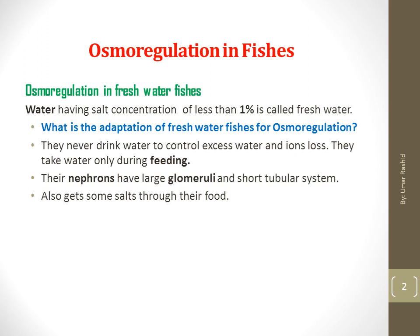Fishes must maintain a proper balance of electrolytes and water in their tissues for their survival. Osmoregulation is a major function of the kidneys and gills of fishes. Kidneys are located near the middle line of the body and are present dorsal to the peritoneal membrane, which lines the body cavity. The excretory structures in the kidney are called nephrons, which are the functional unit. Nephrons filter nitrogenous waste, ions, water, and small organic compounds through glomeruli. The filtrate then passes through a tubule system, which can reabsorb essential components, and the remaining filtrate is excreted out.